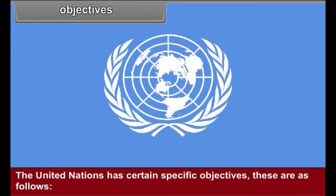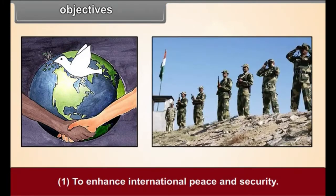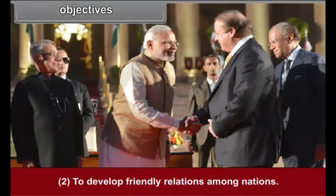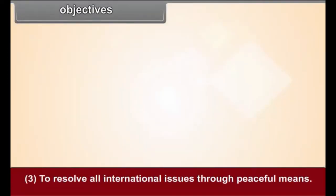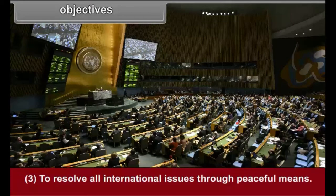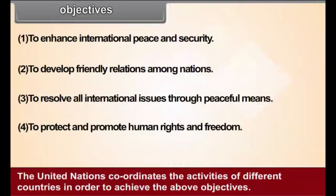Objectives: The United Nations has certain specific objectives. These are: 1. To enhance international peace and security. 2. To develop friendly relations among nations. 3. To resolve all international issues through peaceful means. 4. To protect and promote human rights and freedom. The United Nations coordinates the activities of different countries in order to achieve these objectives.